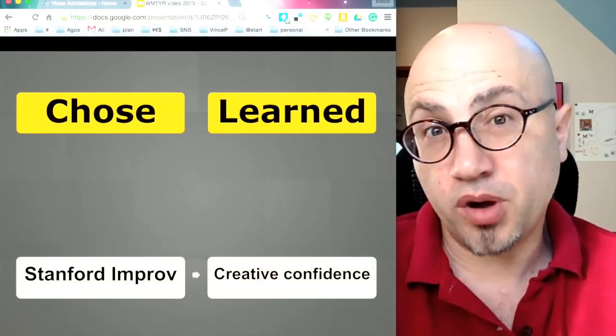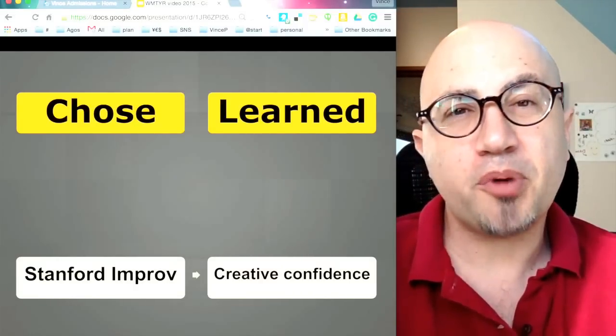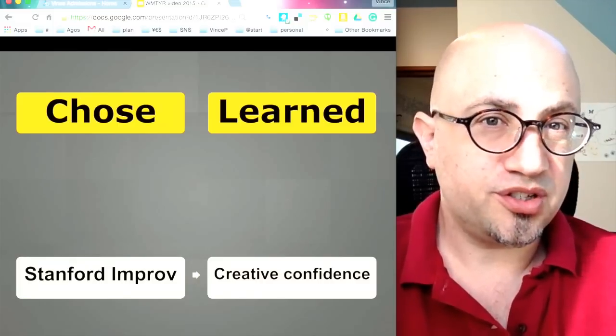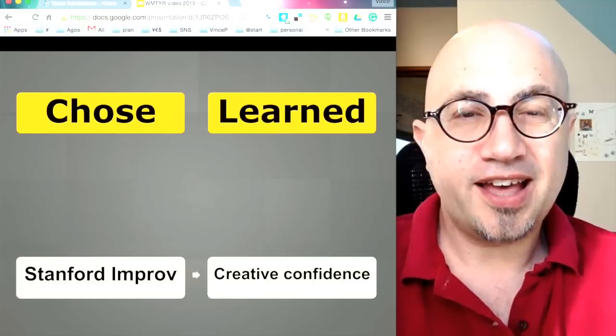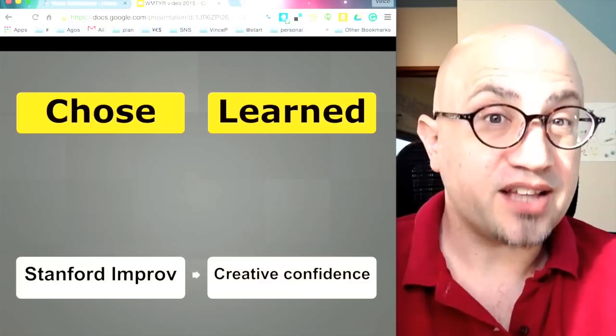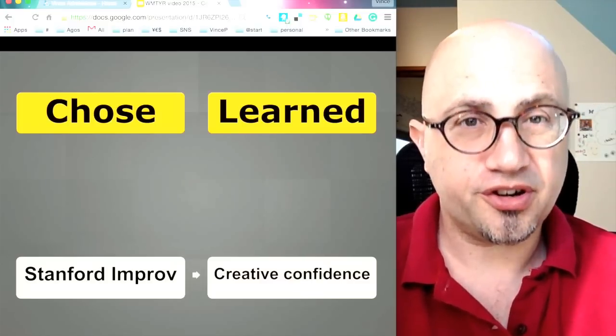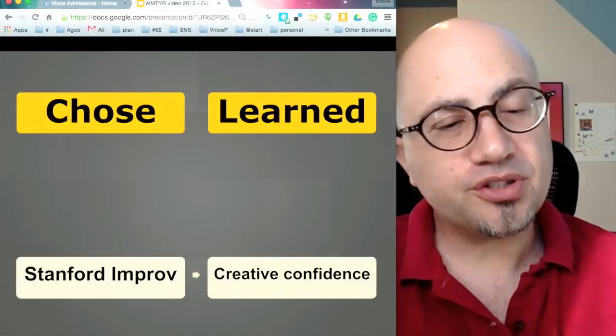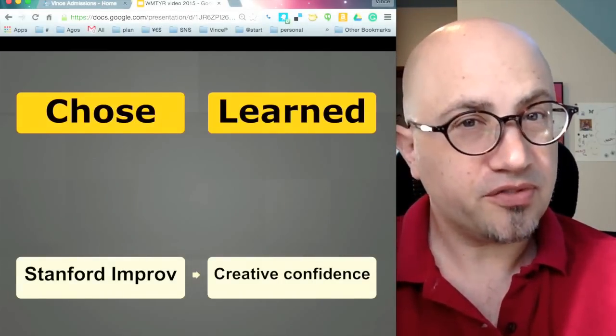I was excited by what was happening in the theater department there. Stanford is famous for improv, improvisation, which has influenced design thinking. A lot of things that are going on at Stanford - I think the improv courses there are fantastic and well known. My professor was a big motivation for me to choose Stanford. So I chose Stanford and I did improv to gain creative confidence.